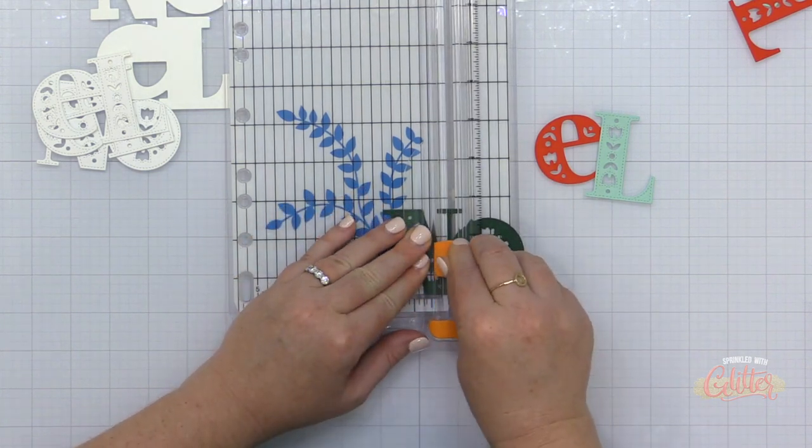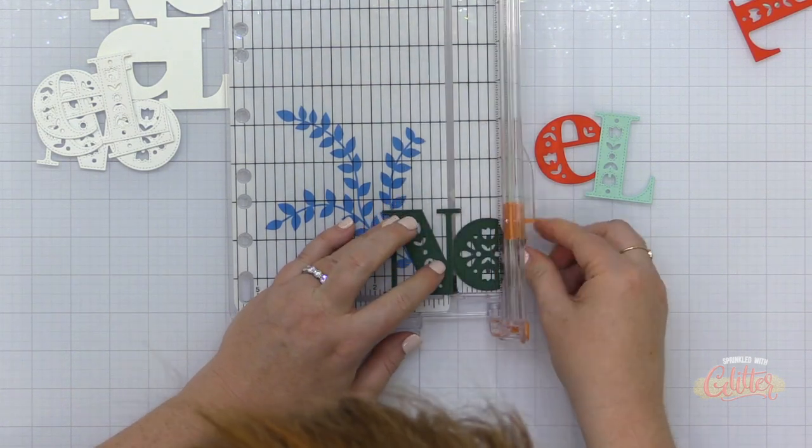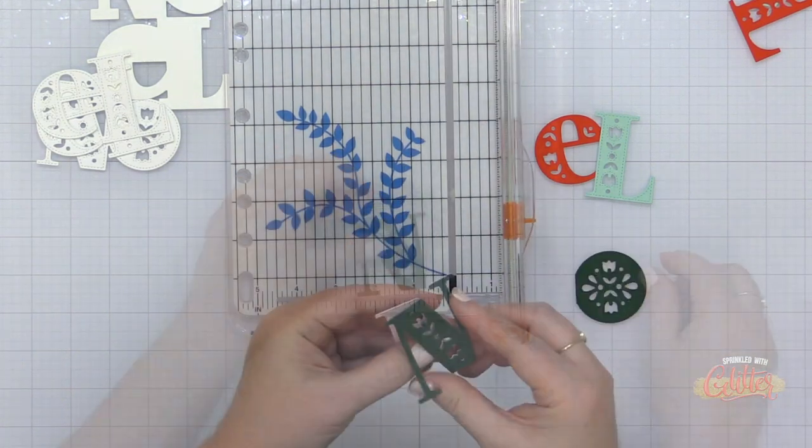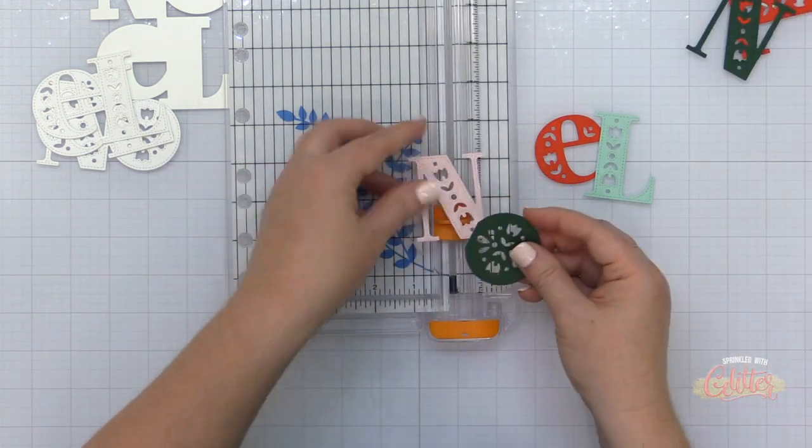I'm going to repeat that on the N and the O once again, just trimming those letters apart. This wire guide trimmer is really helpful for this process, because I can tell exactly where my cut line is going to be.